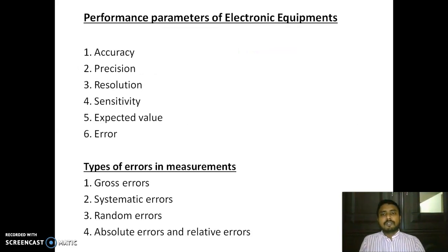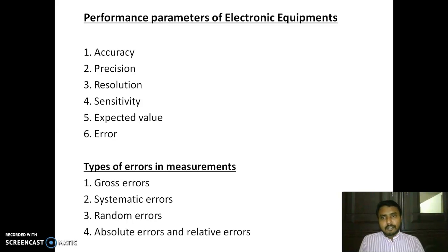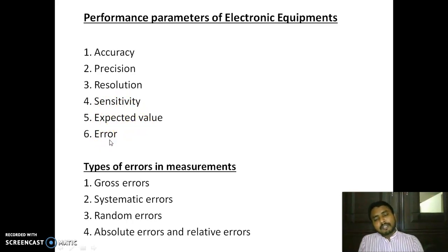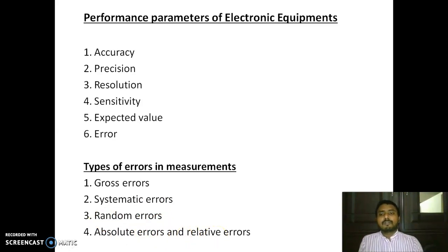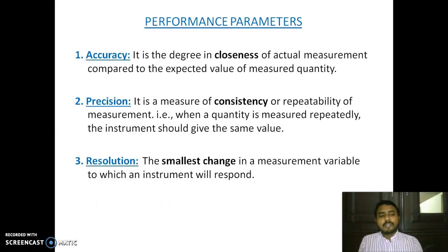We are going to see what the important parameters for electronic equipment are. There are six parameters: first, accuracy; second, precision; third, resolution; fourth, sensitivity; fifth, expected value; and sixth, the types of errors — gross error, systematic error, random error, absolute error, and relative error. We will see each one of these in detail.